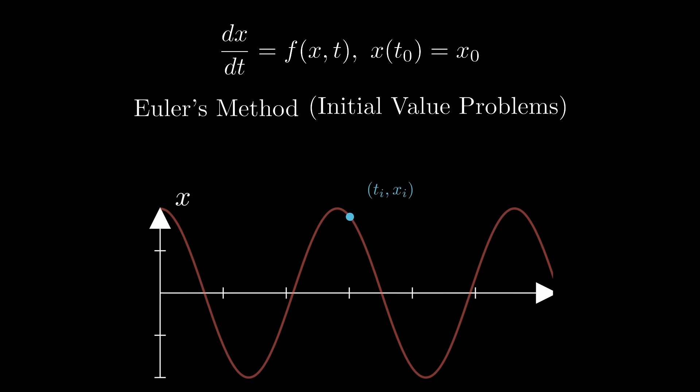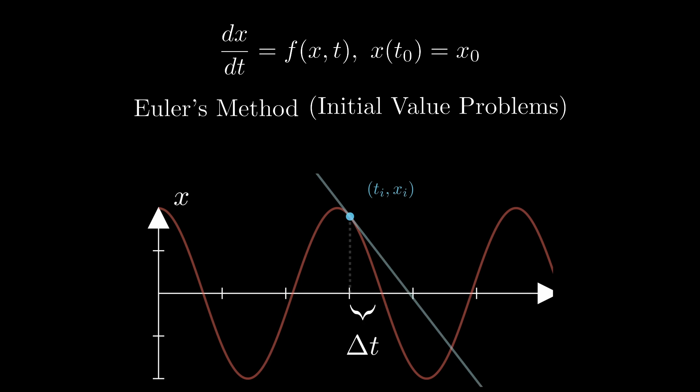Then with Euler's method, if we know some initial conditions, then we know some initial xᵢ at tᵢ. Using our differential equation, we plug those in to find f(xᵢ, tᵢ). We then approximate the next value for x_{i+1} as xᵢ plus f(xᵢ, tᵢ) times Δt.